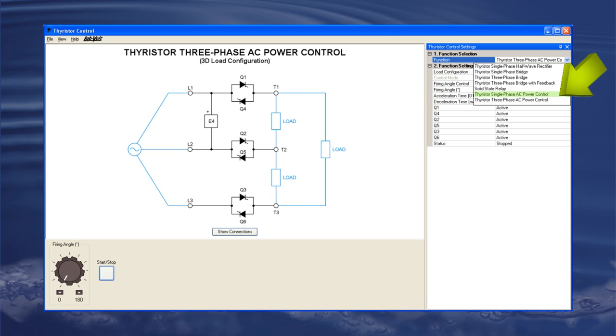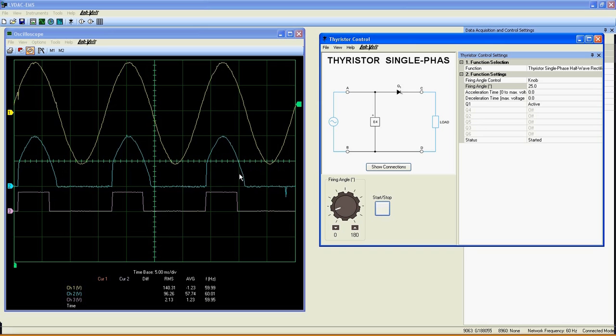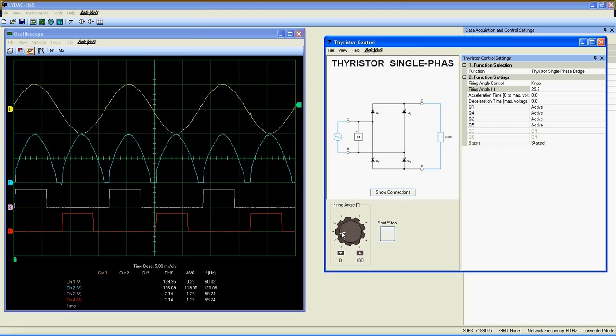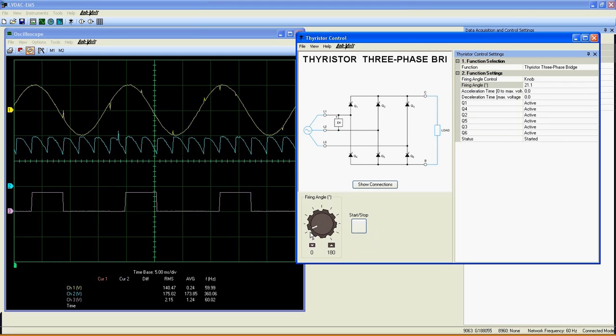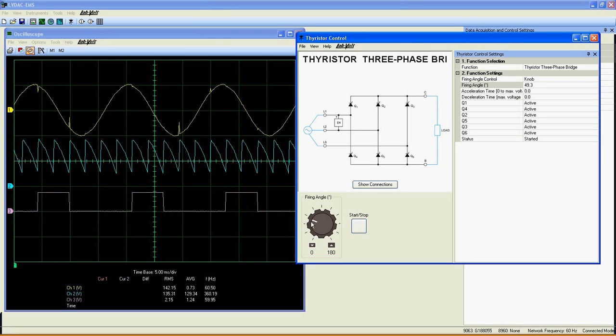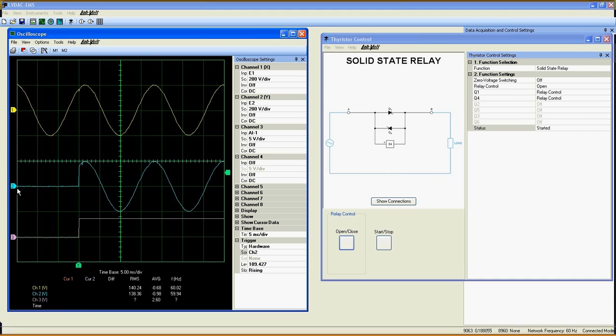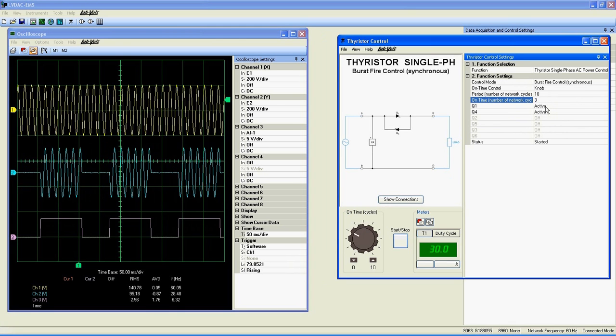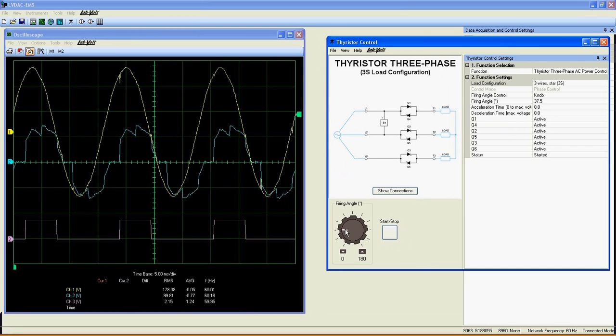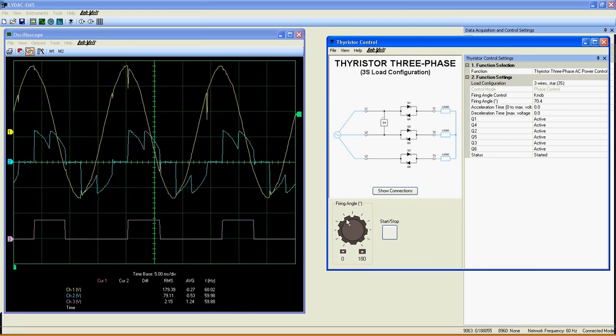Among the functions included in the Thyristor Control Unit, you can find single-phase half-wave rectifier, single-phase bridge, three-phase bridge, solid-state relay, single-phase AC power control, and finally, three-phase AC power control.